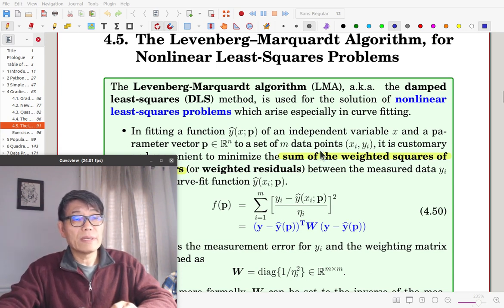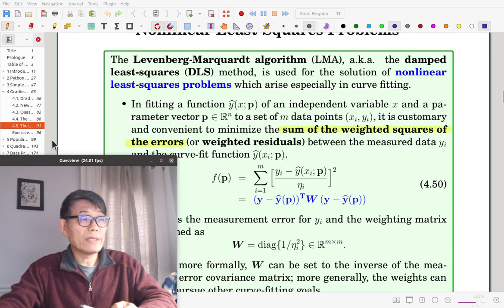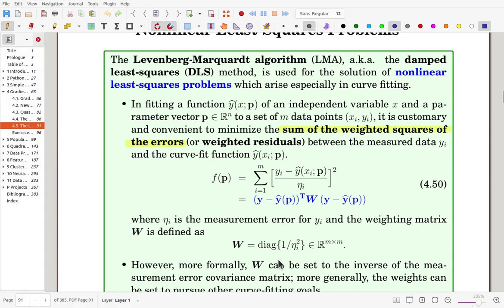For each data point, relative error is measured and squared and summed. By using a matrix-vector notation, we can write in this range. Here W is the weighting matrix, diagonal matrix, 1 over eta_i squared.